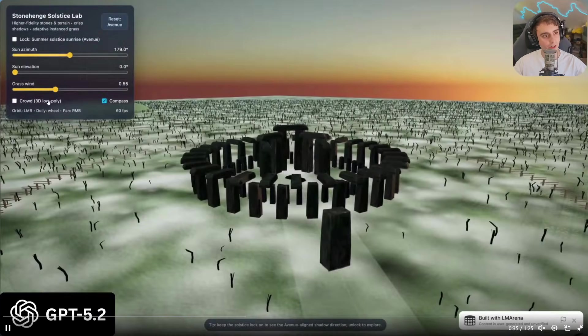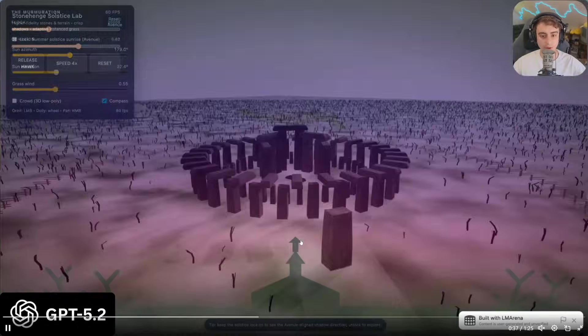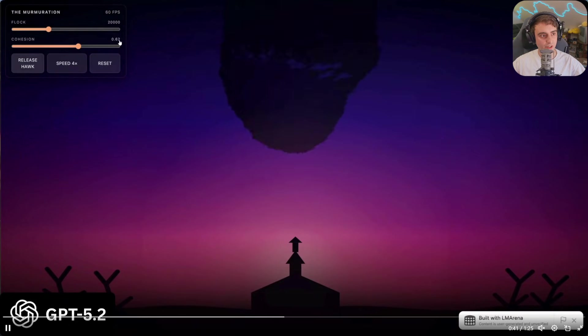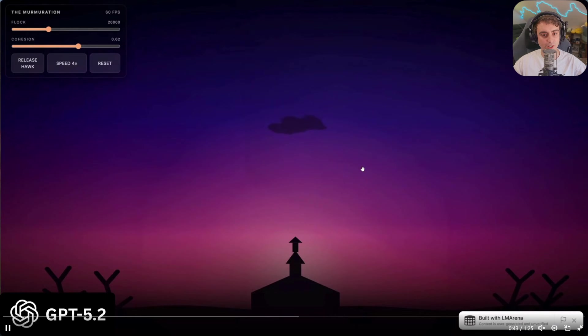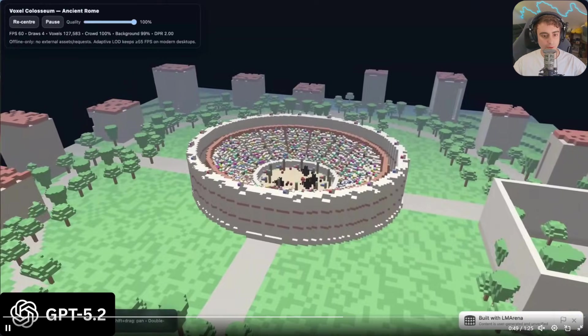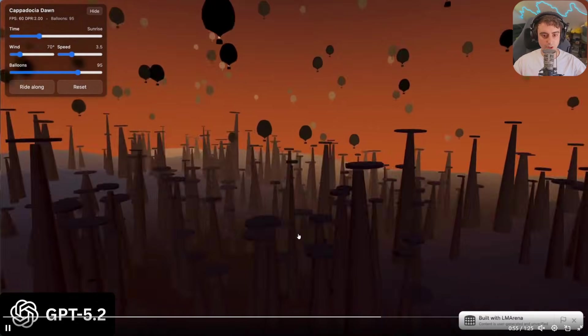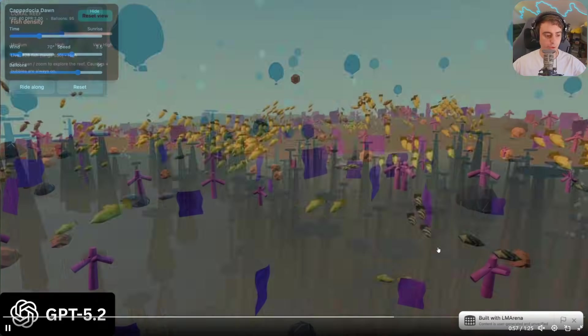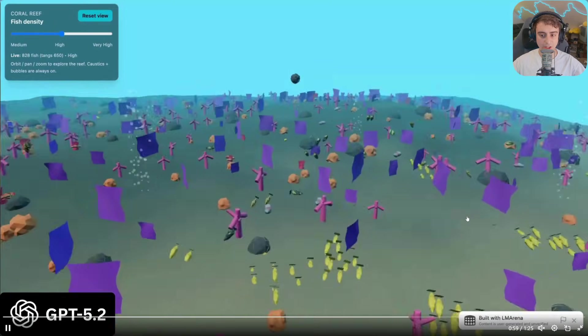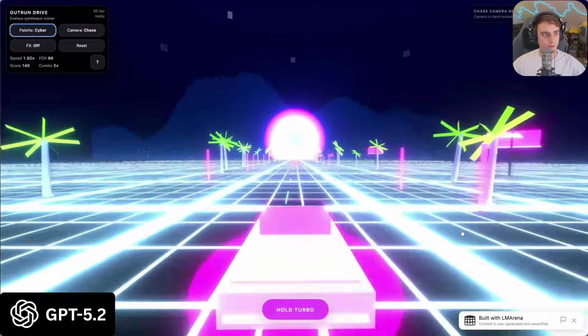Definitely knows how to add a good amount of detail into a singular working project. This is going to be competitive with Gemini 3 and Claude 4.5 Opus. No doubt about it. Stonehenge, the Solstice Lab. That's pretty cool. Murmuration. Oh, it's like a flock of birds. Okay, that's cool. Wow, ancient Rome with the Colosseum as well. That's pretty awesome. Obviously, these are all very similar prompts. We're using voxels. We're using HTML. Look at the animated fish at the bottom. That's pretty crazy.